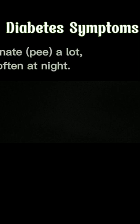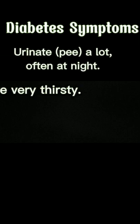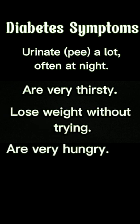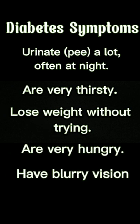Next example of non-communicable disease: diabetes. Diabetes is a chronic condition that occurs when the body either does not produce insulin or cannot effectively use the insulin it does produce. Diabetes symptoms include: urinating a lot, being very thirsty, losing weight without trying, being very hungry, and having blurry vision.